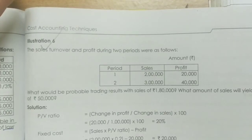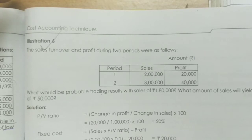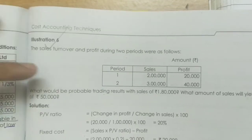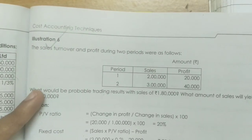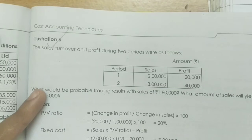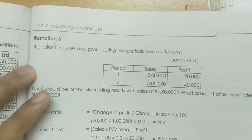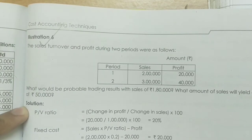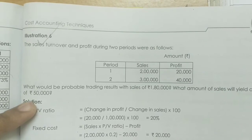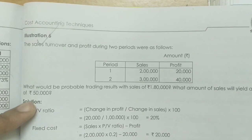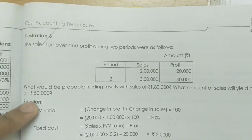Hi friends, welcome to Amazon World. Now we are going to show you the video on sales turnover and profit during two periods. We are going to show you the sales and profits. What would be the probability of trading results with sales of $1,80,000? What amount of sales will yield a profit of $50,000?